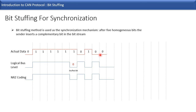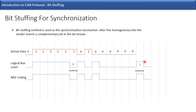Now zero continues for the next five bits, so we again have five homogeneous bits, and again we need a bit stuffing. The opposite polarity bit is inserted in the bus level. After the stuffed bit, the next zero is then represented following it. Like this, we continue the bit stuffing process throughout the CAN bus data.